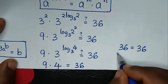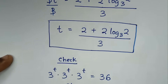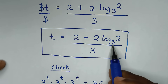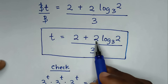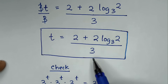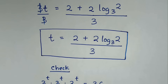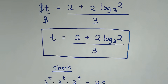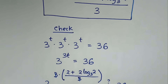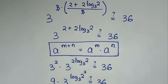Left side and right side are equal, so it is true. The value of t is 2 plus 2 log base 3 of 2, all over 3, which is the simplest form. Thank you. Don't forget to subscribe to my channel and see you in the next video. Bye bye.